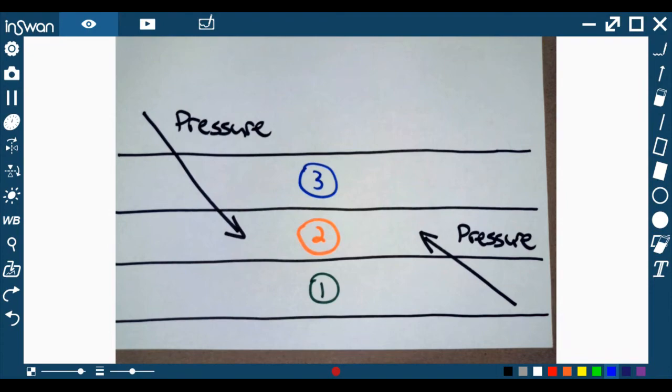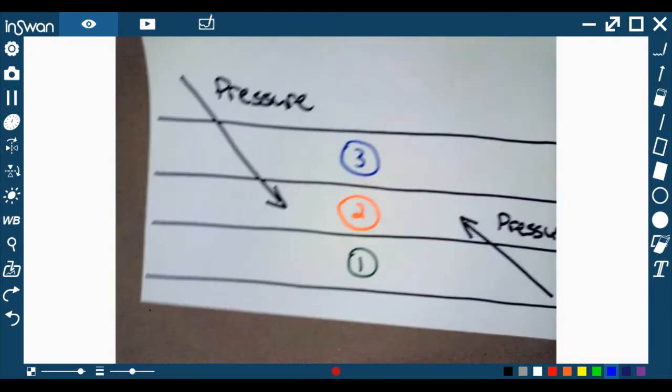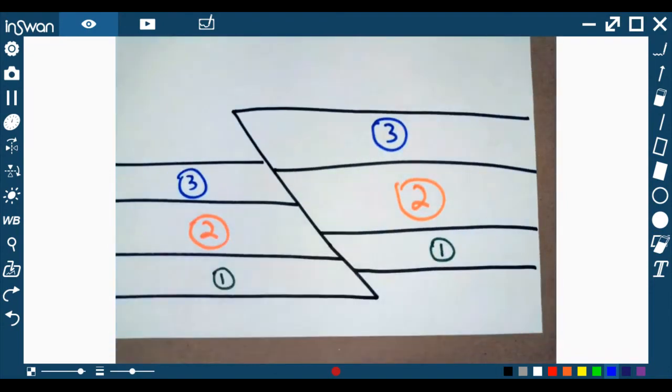And so what we can see is the rocks are not bent anymore, but they're broken. And the numbers still show you which rock layer it is. But if you go to those places, it might look like someone took a knife and split that and then lifted part of it up and then pushed part of it down.